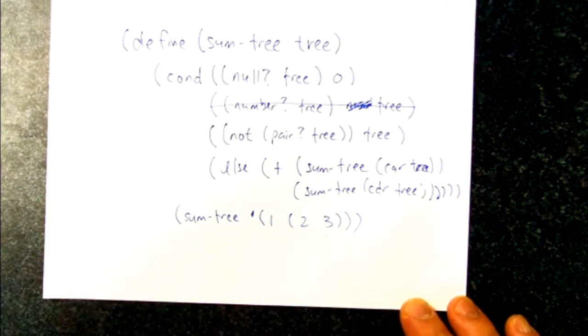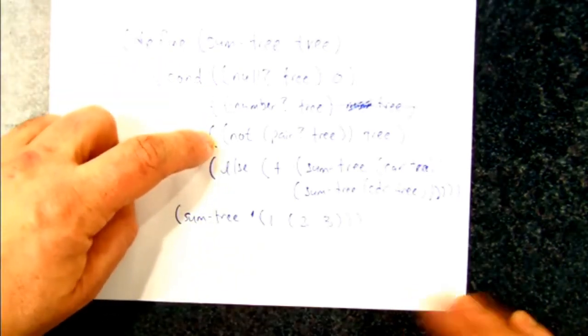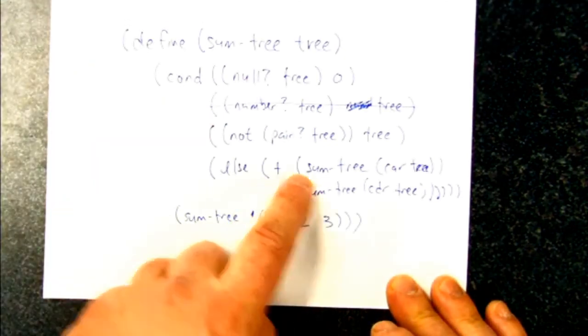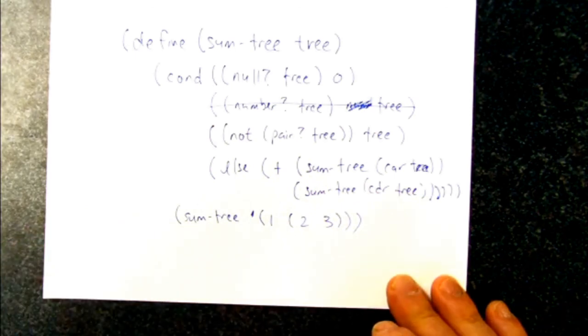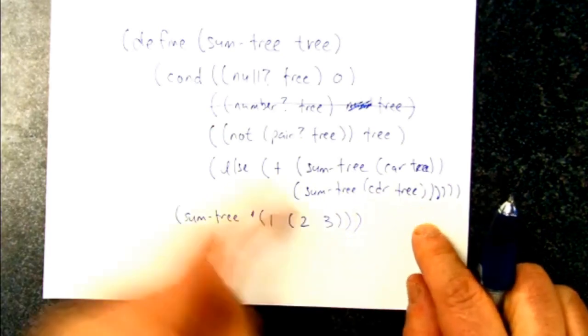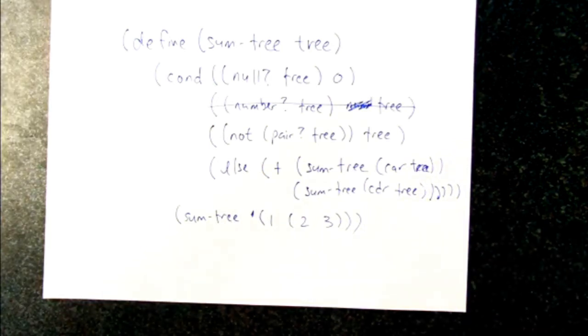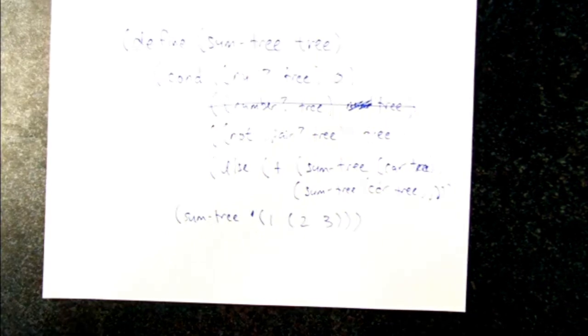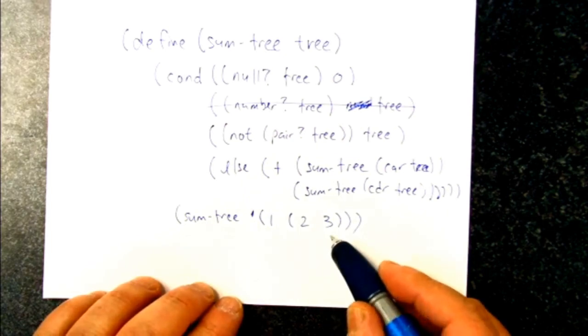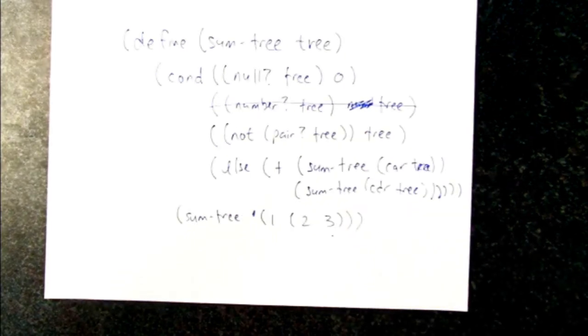So if we look at the first recursion, it's going to call sum tree with a one. That one will say, oh yeah, that's not a pair. It's a number. And so that will return one right away. So this first recursion on the car will immediately say, yes, it's a one. But then we've got this other recursion on the list two, three. That one's going to split into sum tree on a two and sum tree on the list three. That sum tree on two will return right away. The sum tree on list three needs to recurse again. Because that will unpack into three and empty list. All right, fine.